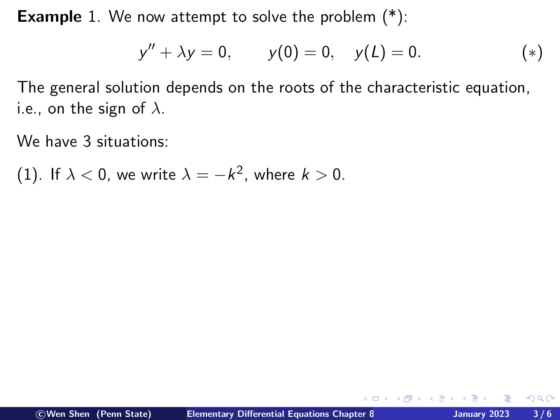So the first situation is when lambda is negative. So if lambda is negative, let's write lambda = -k² for some k strictly positive. Then the characteristic polynomial becomes r² + λ = 0. Lambda is -k², then it becomes r² = k². So this is the case that we have two real solutions. r₁ is -k, and r₂ is positive k. And then we can form the general solution as e^(kx), and then the second solution is e^(-kx), and we make a linear combination. So c₁ times the first solution plus c₂ times the second solution.